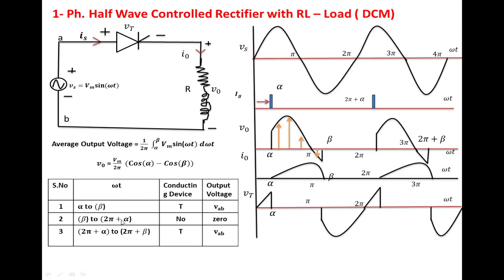From β to 2π + α, no device is connected in the circuit, so the output voltage is zero. From 2π + α to 2π + β, the thyristor is conducting again, and the output voltage is Vab.